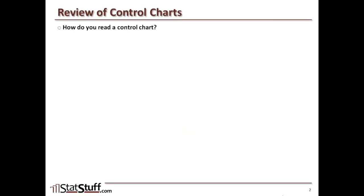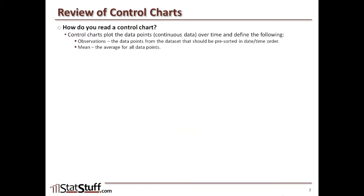How do you read control charts? Control charts plot the data points, usually using continuous type of data. Over time, they define a few things for us. They first define the observations, the data points from the data set that should be in a pre-sorted order, like a date-time order. Also, it would plot for us the mean, the average for all the data points.